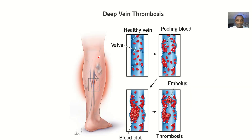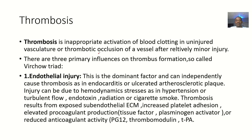So this is thrombosis. Thrombosis is basically a clotting of blood inside a blood vessel. Normally blood is just supposed to flow freely, and blood should clot only when there's injury. But in thrombosis there is now irregular clotting of blood in the blood vessels. Thrombosis is an inappropriate activation of the blood clotting pathway in uninjured vasculature — the blood vessel is not injured, but blood clotting is just happening.